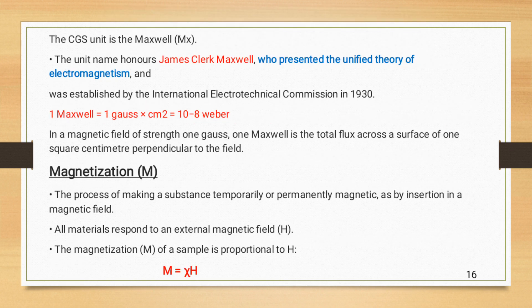The CGS unit is the Maxwell. The unit named James Clerk Maxwell who presented the unified theory of electromagnetism and was established by the International Electrotechnical Commission in 1930. 1 Maxwell is equal to 1 Gauss into centimeter square is equal to 10 raised to minus 8 Weber.